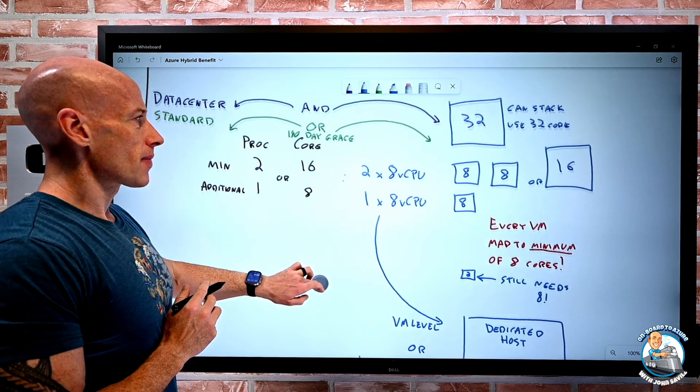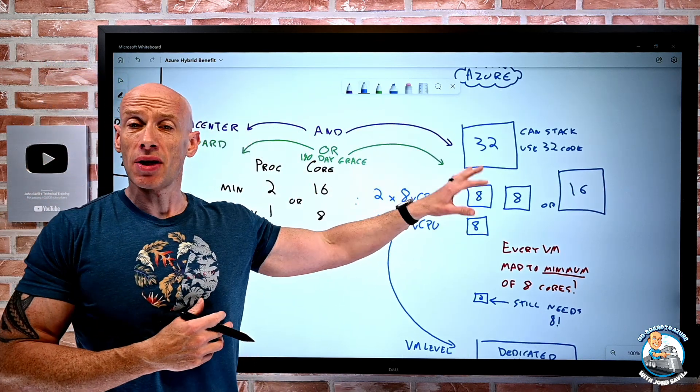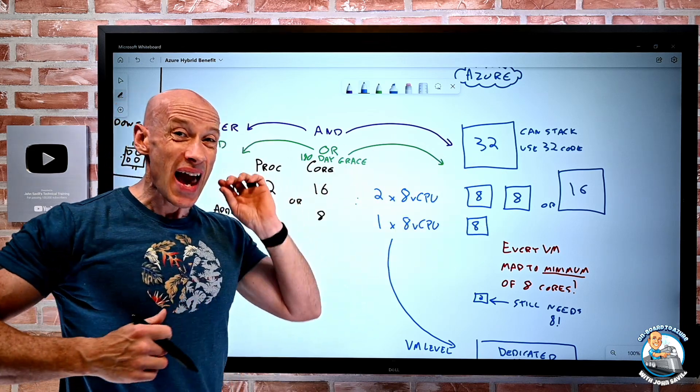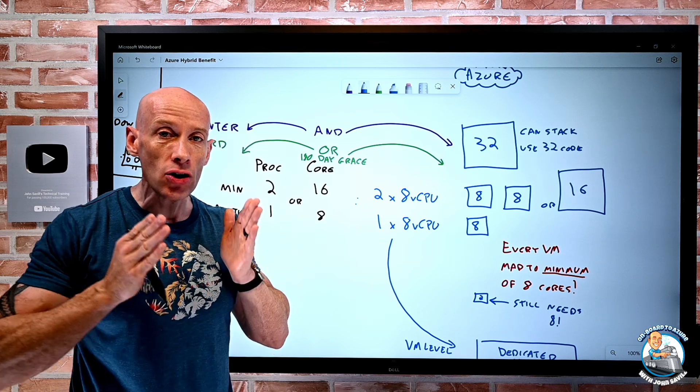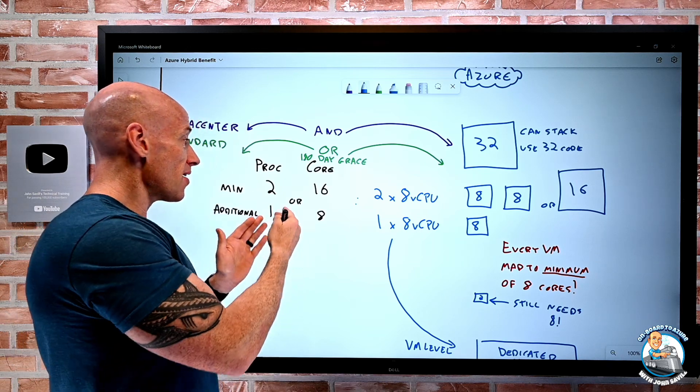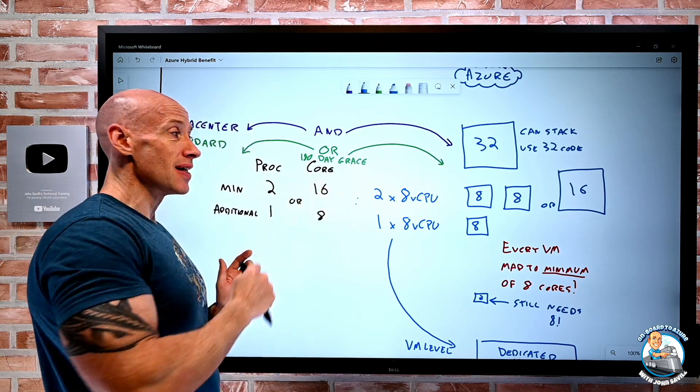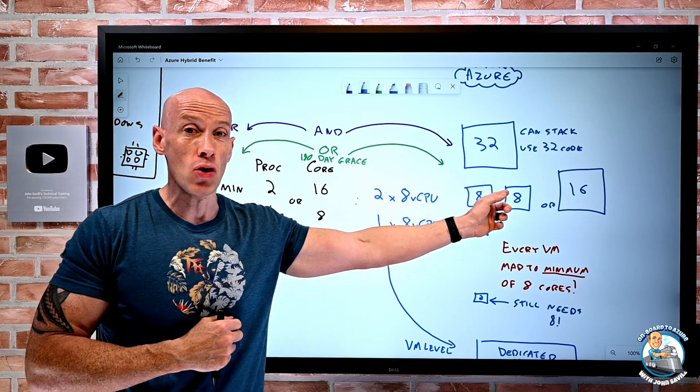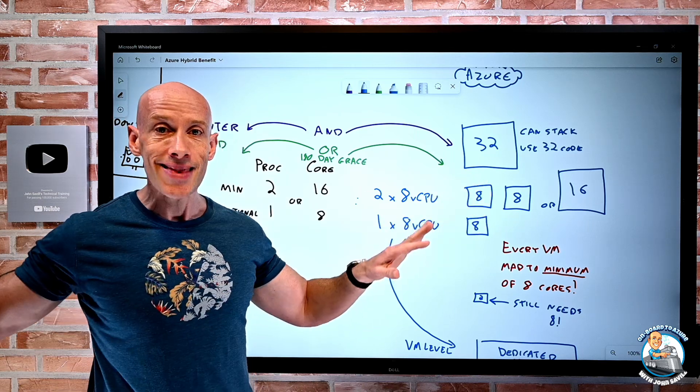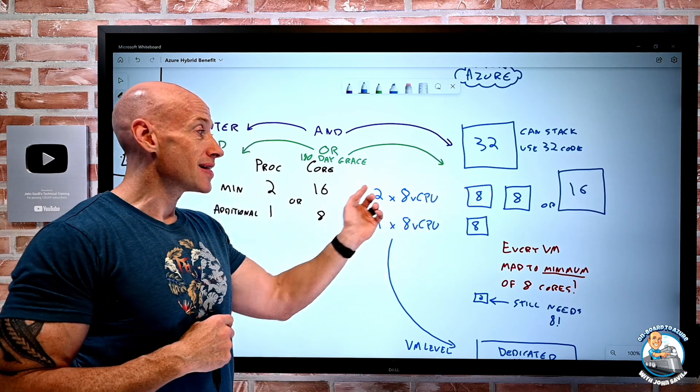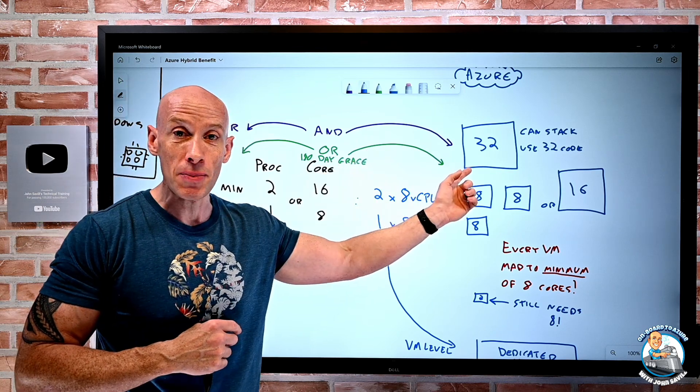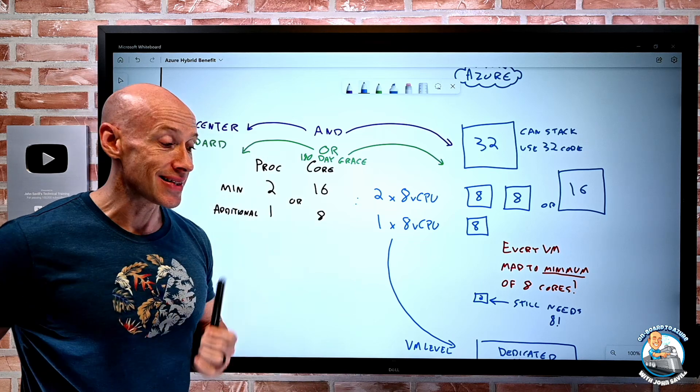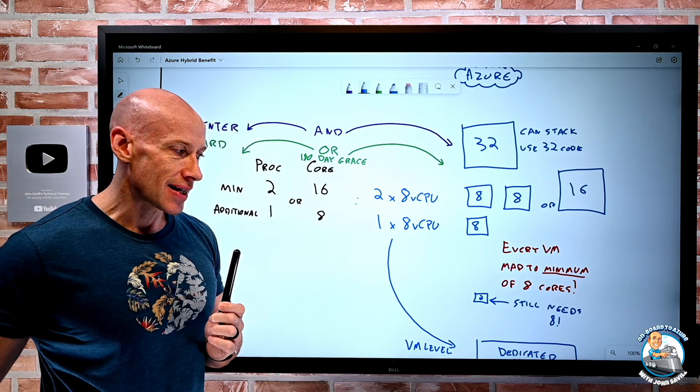So hopefully that makes sense. With Windows, I bring those packs, I use them and apply them based on the number I have to Windows workloads. But every VM is going to be a minimum of eight cores. If I have 16 cores worth of licenses, I can create two VMs and apply that. Even if those VMs only have two virtual CPUs each, that's it. I can't go and create 16 one-CPU VMs or eight two virtual CPU VMs. Every VM is using up eight cores worth of license at a minimum. So that's a really important thing to understand.